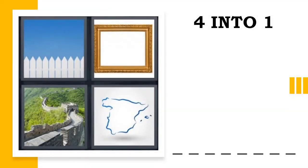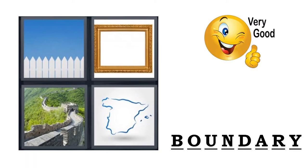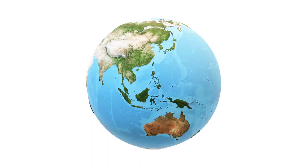In this 4-into-1 puzzle, the correct answer is 'boundary.' The answer is boundary — now how does boundary relate to earth? In this topic we will know that as we go along in our discussion.